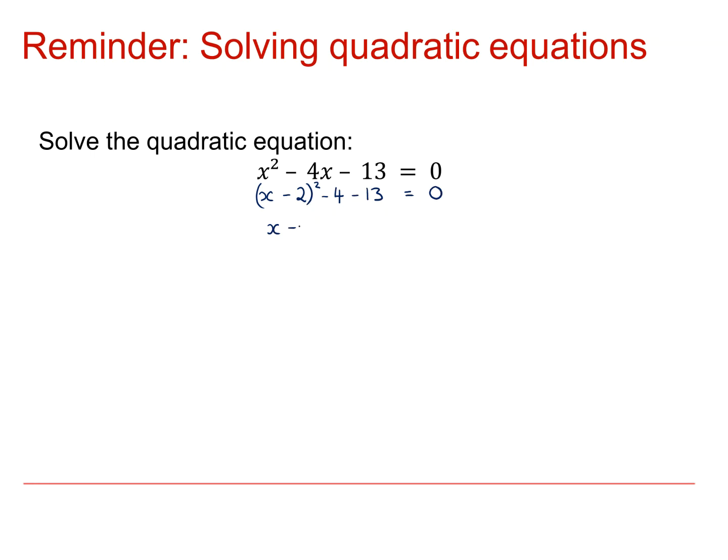Rearranging this, we get x minus 2 squared is equal to 17. Square rooting both sides, x minus 2 is equal to plus or minus the square root of 17. And we end up with x equals 2 plus or minus the square root of 17.